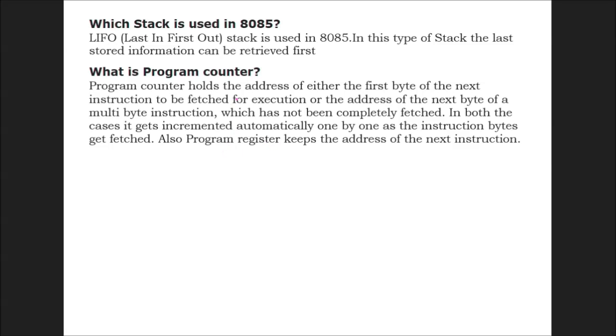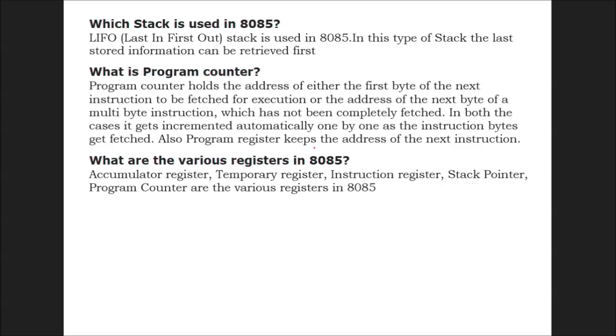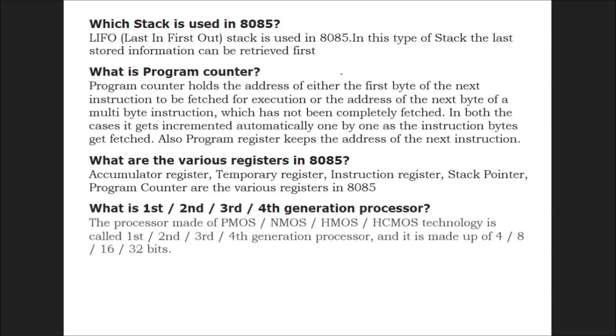What are the various registers in 8085? We have accumulator register, temporary register, instruction register, stack pointer, and program counter. What is first, second, third, and fourth generation processor? The processors made of PMOS, NMOS, HMOS, and HCMOS technology are called first, second, third, and fourth generation processors, made up of 4, 8, 16, and 32 bits respectively.